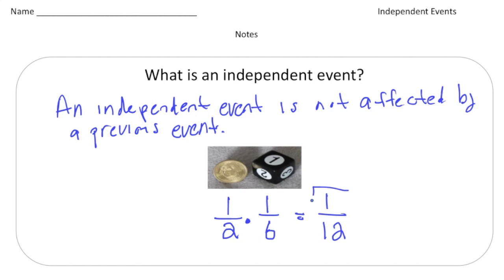And two times six gives you 12. So there's a one in 12 probability that you'd flip a coin and land on heads and then you'd roll a number cube and you get a one. But the big thing to understand about this is that independent events are not affected by the previous event. So rolling the number cube is not impacted at all by the flipping of the coin.